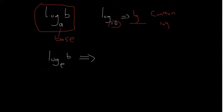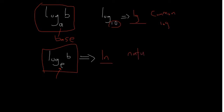Any logarithmic function that has got a base equal to the constant e can be written as ln. Whenever you see ln, you can also see this on your calculator — it simply means the base is e. These are known as natural logarithms. Take note of that; it's very important.